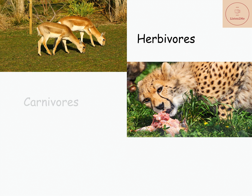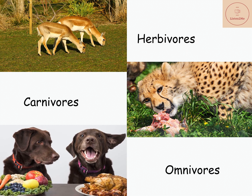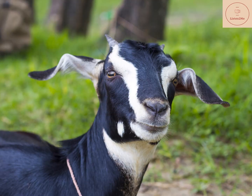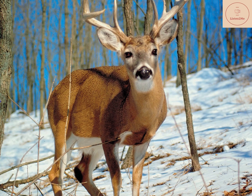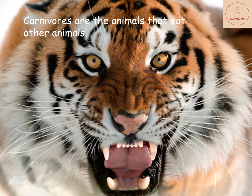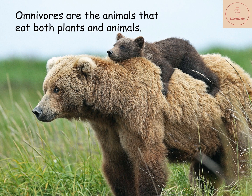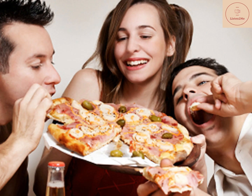These three types are herbivores, carnivores, and omnivores. Herbivores are the animals that eat plants and plant products — for example, cow, goat, and deer. Carnivores are the animals that eat other animals — for example, tiger and lion. Omnivores are the animals that eat both plants and animals — for example, bears and birds. Then, which category do we humans belong to? Let me know in the comment section.